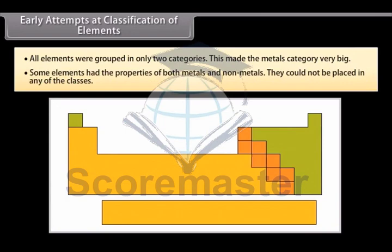Some elements had the properties of both metals and non-metals. They could not be placed in any of the classes. This increased the need to identify some kind of pattern or regularity in the properties of the elements and then classify them.